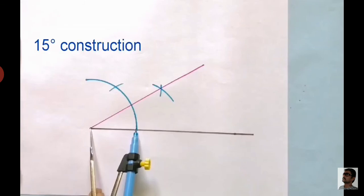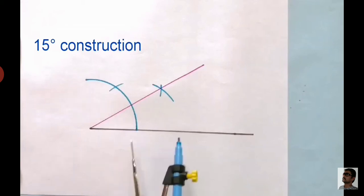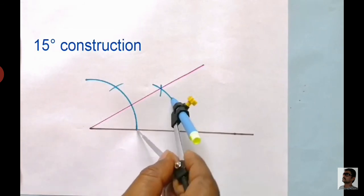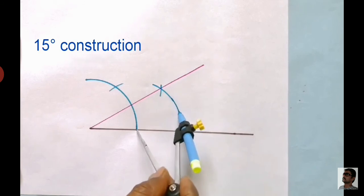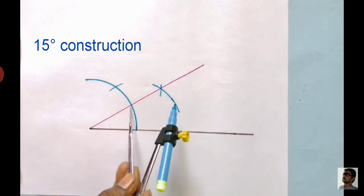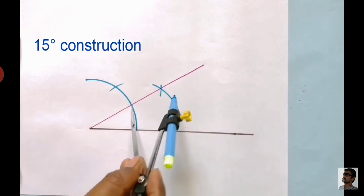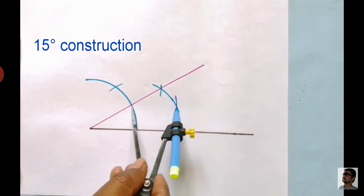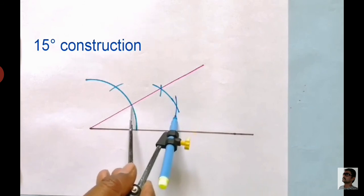Now take the same radius as shown, put the compass pointer and draw an arc. Without changing the radius, put the compass pointer at the line of 30 degrees and intersect the previous arc.